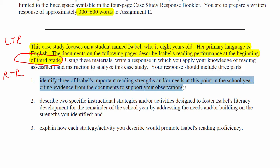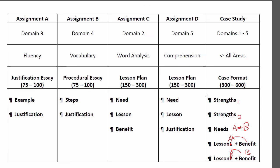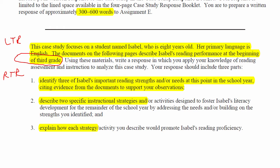You need to identify three of Isabel's important reading strengths and/or needs at this point in the school year and cite evidence — you're going to be providing examples. Two lesson plans are required, and then two benefits. That's why I recommend doing two separate strengths, two separate needs, and two separate lessons with two separate benefits that align with each lesson plan. That way you can satisfy the terms of this question.